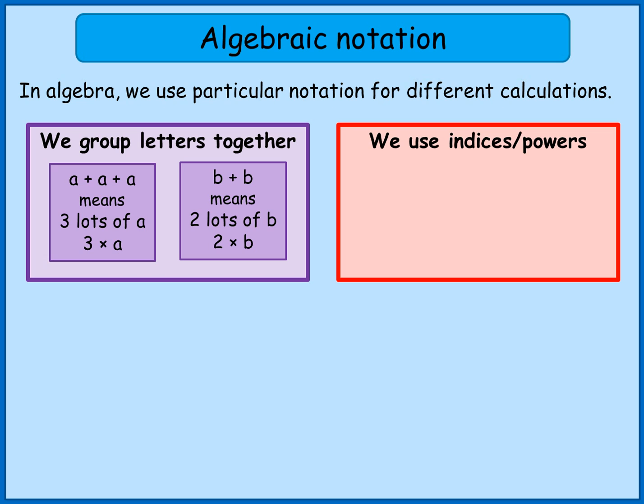We use indices or powers. So if I have a calculation like a times a, well when I multiply two numbers together that are the same, think about square numbers. Two times two I could write as two squared. So a times a I'd write as a squared and read it as a squared.